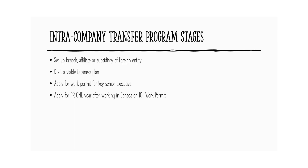Now for the intra-company transfer program, which is quite popular — under this program, you first set up an affiliate or a subsidiary of your international business in Canada. You then draft a viable business plan and apply for a work permit for a key senior executive or a specialized knowledge worker. One year after running your business in Canada under the ICT work permit, you can then apply for PR. I get a ton of questions on how to apply for PR after being on an ICT work permit for one year, so I will make another video just to explain how this process works.